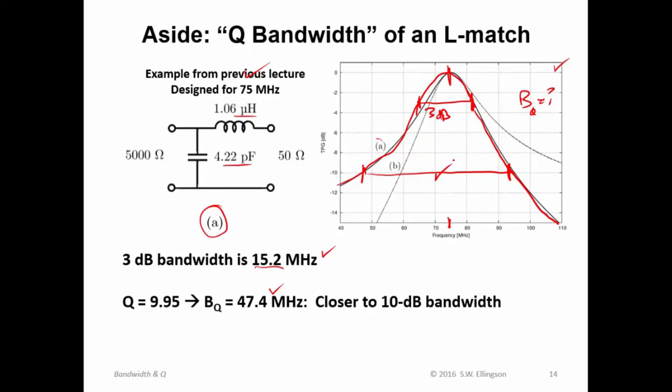Now, I'll lay one other idea on you. And this is useful trivia. I'm not going to derive it. But you will see that it's true when we do other problems. Here's the idea. When Q is much, much greater than 2π, then the 3 dB bandwidth turns out to be approximately the Q bandwidth, that is B sub Q, divided by 2.